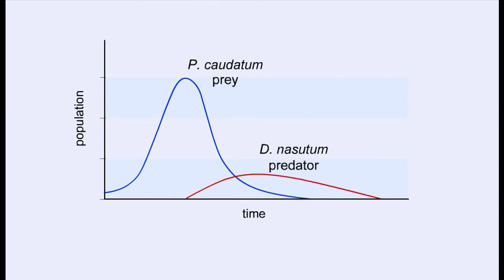However, in a natural setting, the prey species will reproduce and even immigrate into the area, so usually there is a steady food supply for the predators. However, prey species are not at the total mercy of the predators.